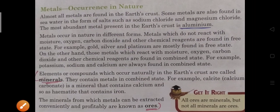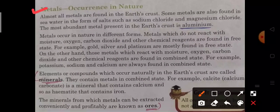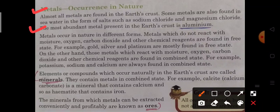Now first of all we discuss about metals and their occurrence. Almost all the metals are found in the earth's crust. Some metals are also found in sea water in the form of salts such as sodium chloride and magnesium chloride. The most abundant metal is aluminium.